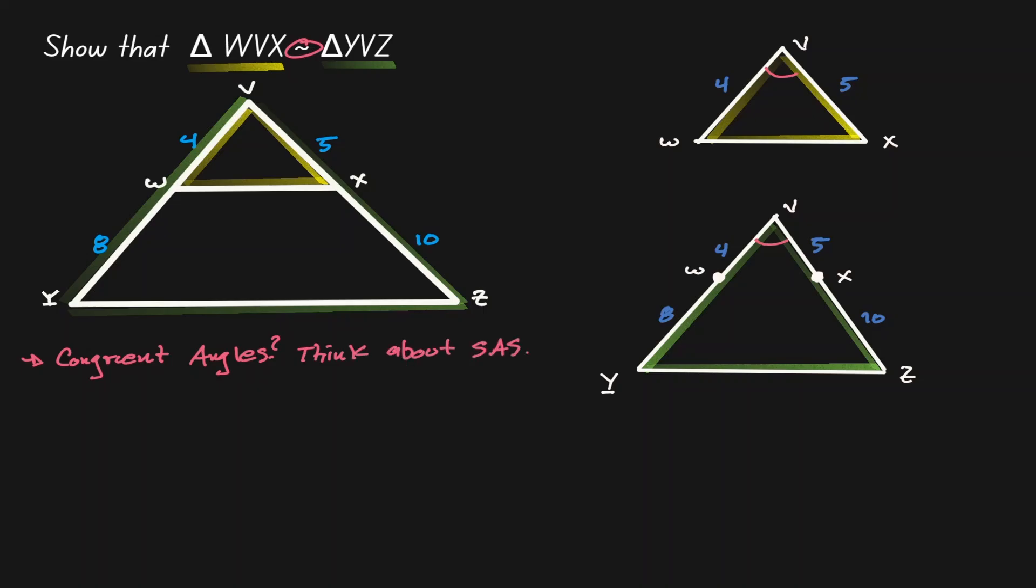To see if we can use side angle side, now let's find the proportion of the line segments of those congruent angles. Let's find the proportion between WB and YB. WB has a length of 4, and to find the length of YB, we need to add 8 and 4, which is 12. Now we can simplify this as 1 third.